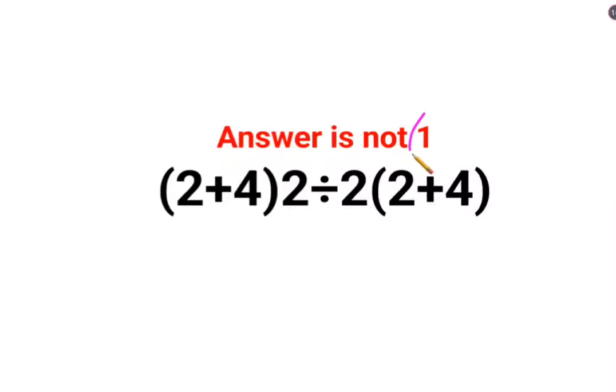Welcome everyone. A lot of people thought the answer for this one was supposed to be 1 because 2 plus 4 multiplied by 2, then divided by 2 into 2 plus 4.